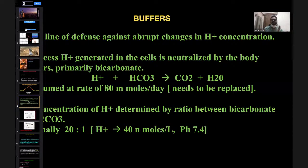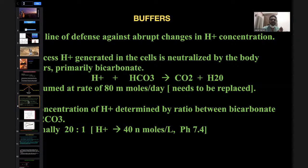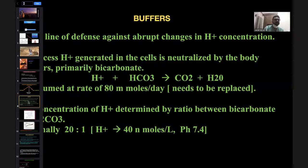When extra acids are generated, buffers absorb the extra H+ ions to maintain pH. Neutralization of excess acid is primarily handled by conversion to base available in the body. When you have excess H+ ions, they combine with bicarbonate and are metabolized into carbon dioxide and water, which exits via the lungs. This happens daily and 80 millimoles needs to be replaced. The H+ ion concentration is the ratio between bicarbonate and carbonic acid, normally around 20:1, giving a pH of roughly 7.4.